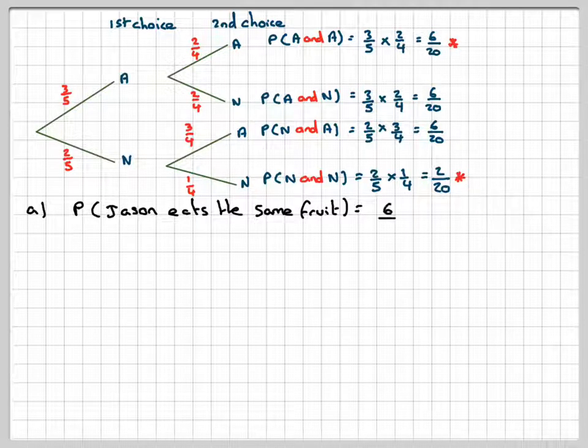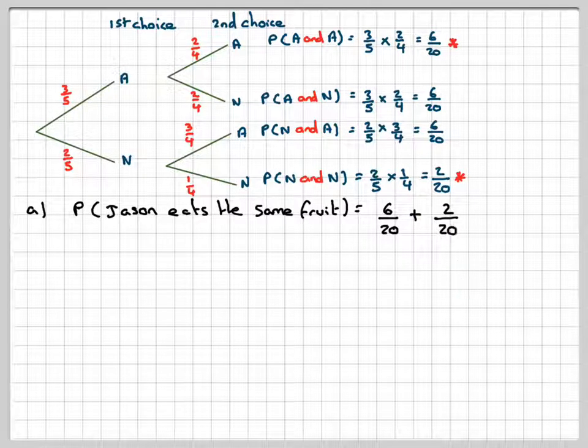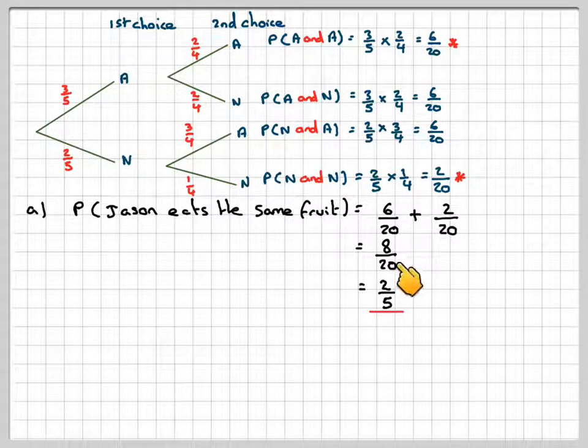So that's going to be six out of twenty plus two out of twenty, which makes eight out of twenty, which makes two-fifths, canceling down by four.